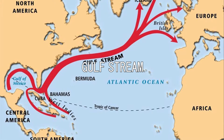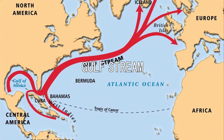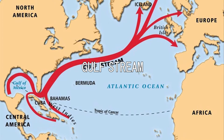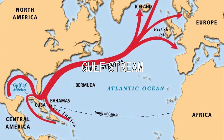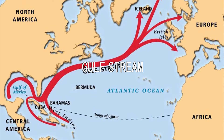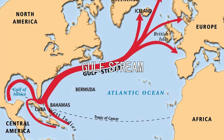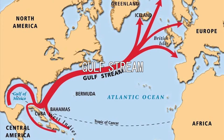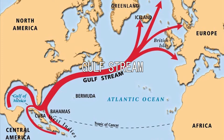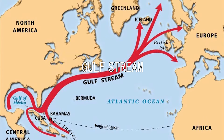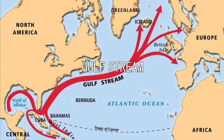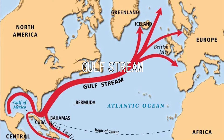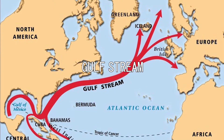The Gulf Stream is a warm and fast-moving ocean current. It runs from the Gulf of Mexico, following the eastern coastlines of the United States and Newfoundland, before crossing the Atlantic Ocean and becoming the North Atlantic Current.